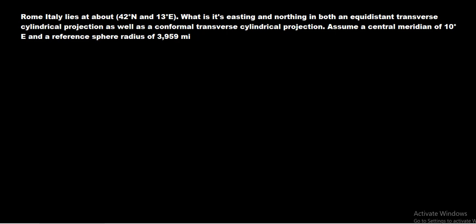Hello everyone, welcome back to another mathematical GIS lecture video. In this lecture video I want to go through an example of the conformal transverse cylindrical projection and the equidistant transverse cylindrical projection. Specifically, we're going to look at the city of Rome. Rome, Italy lies at about 42 degrees north and 13 degrees east, and we're assuming a central meridian of 10 degrees east and a reference sphere with radius 3,959 miles.